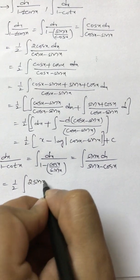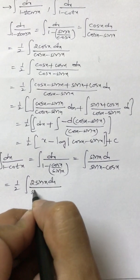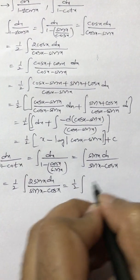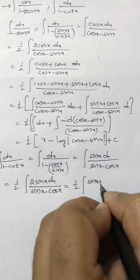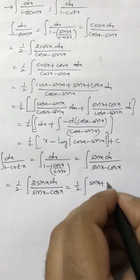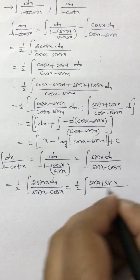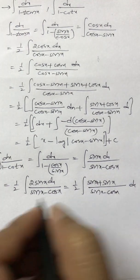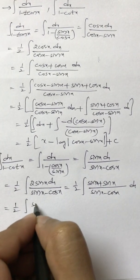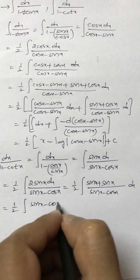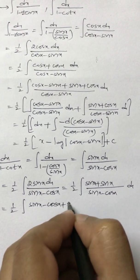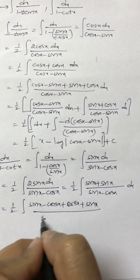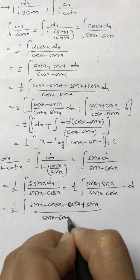So 1 by 2 into integral of sin x plus cos x. First write 2 sin x as sin x plus sin x. By looking at the denominator, add and subtract cos x, giving sin x by sin x minus cos x dx.